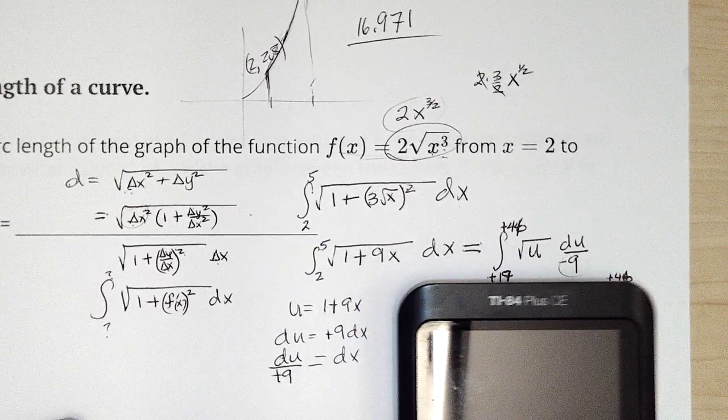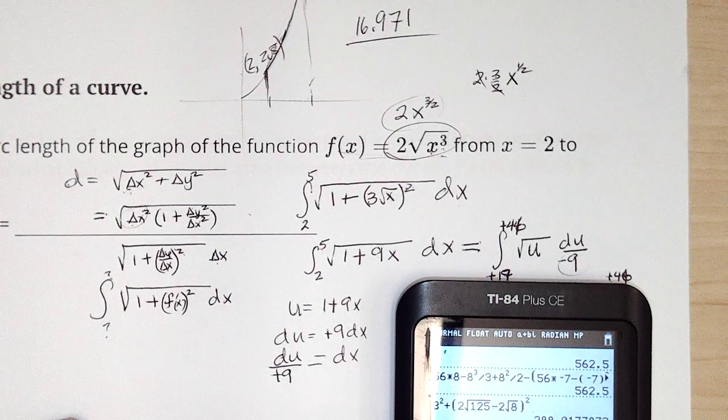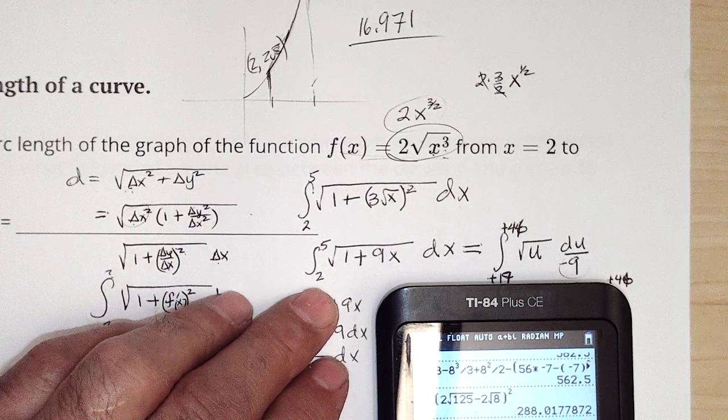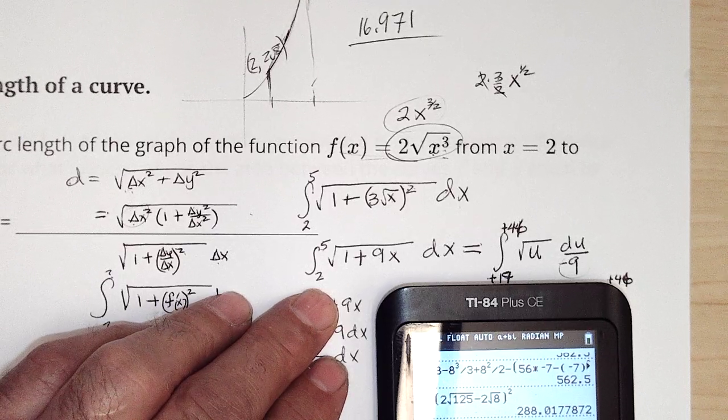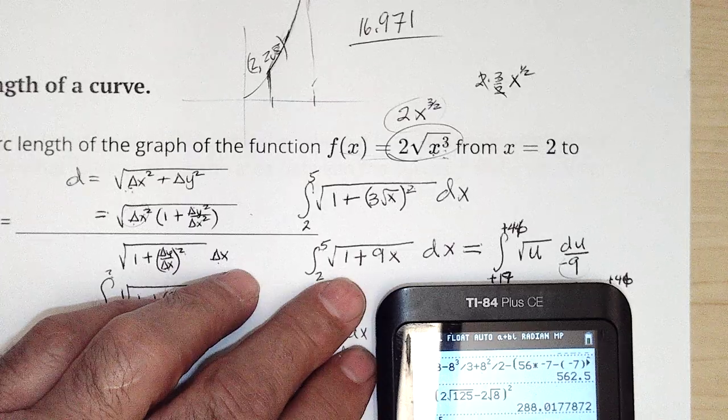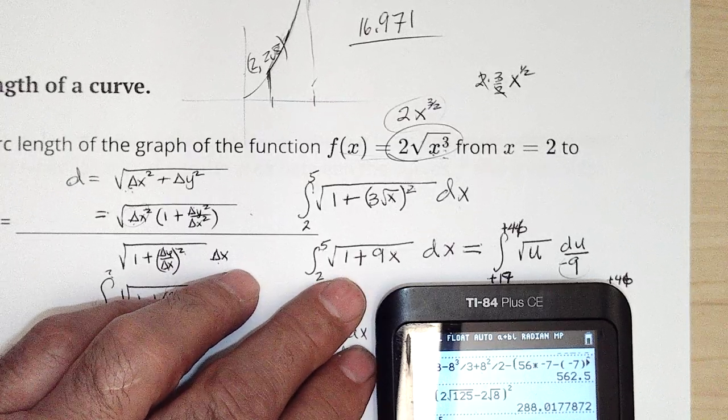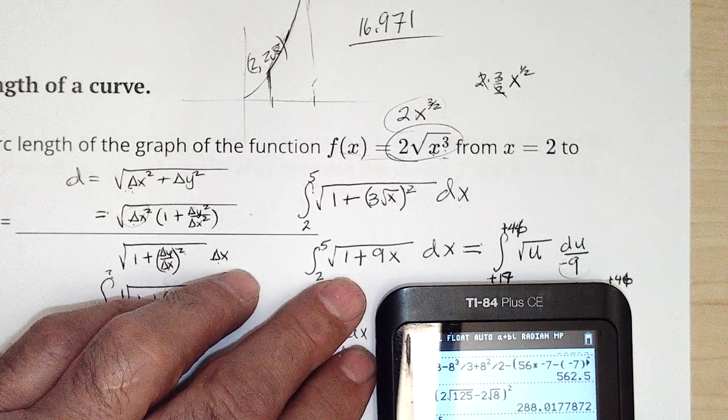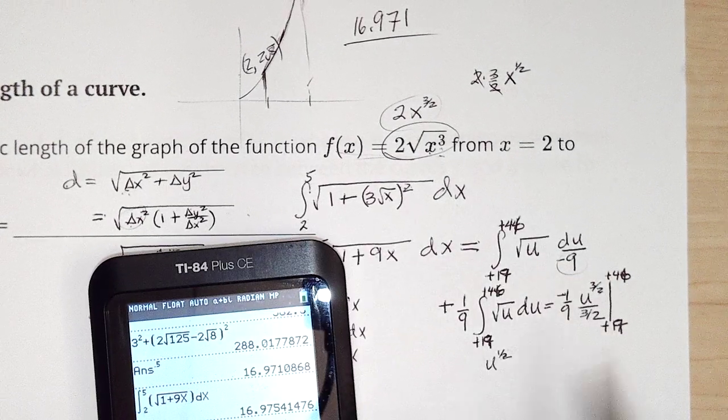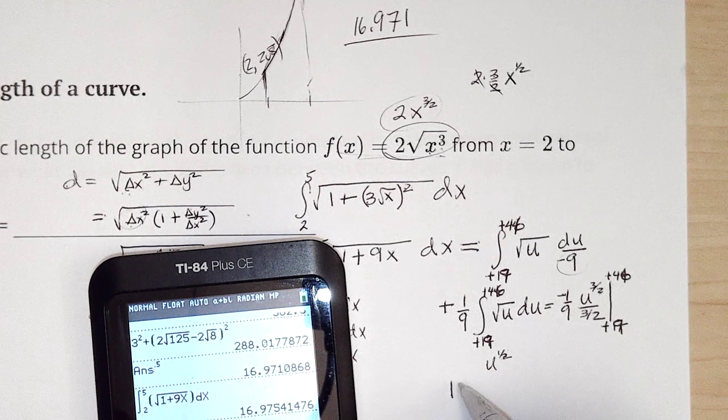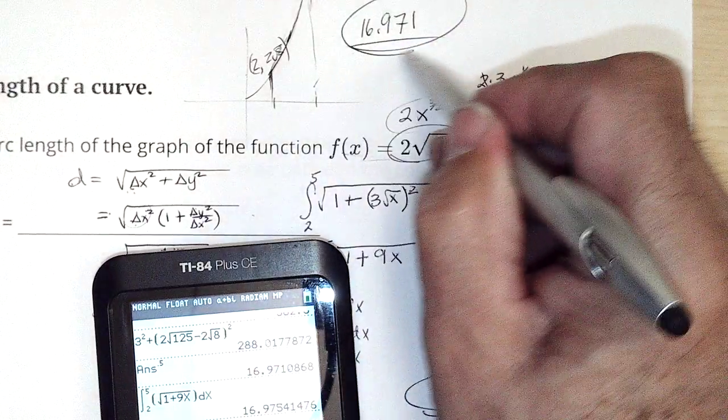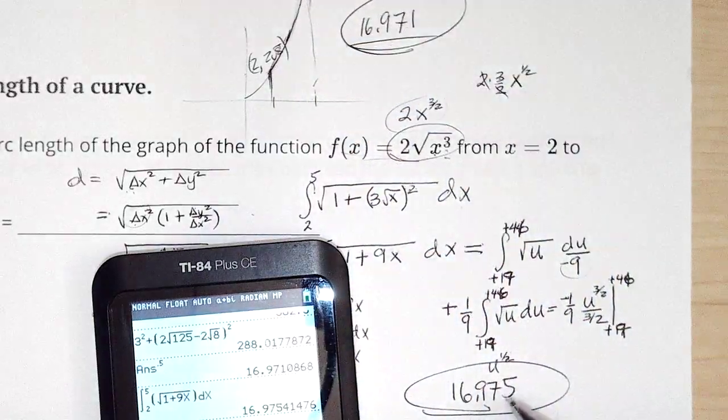Or I could have just typed in here, the integral from 2 to 5 of square root of 1 plus 9x dx. Got the plus right that time. And we should get 16.975. Notice that that's a little bit more than just doing the straight line distance. This curve adds a little length to it.